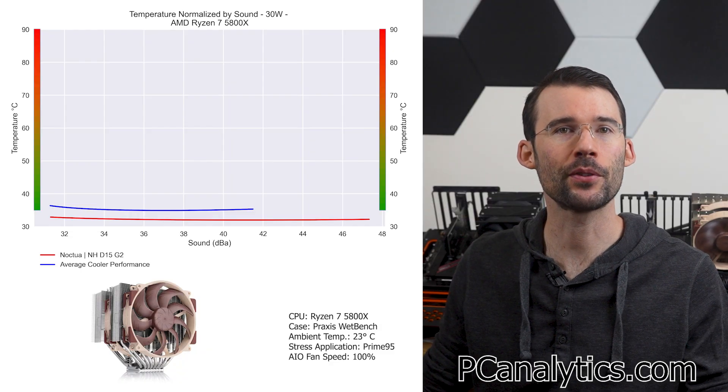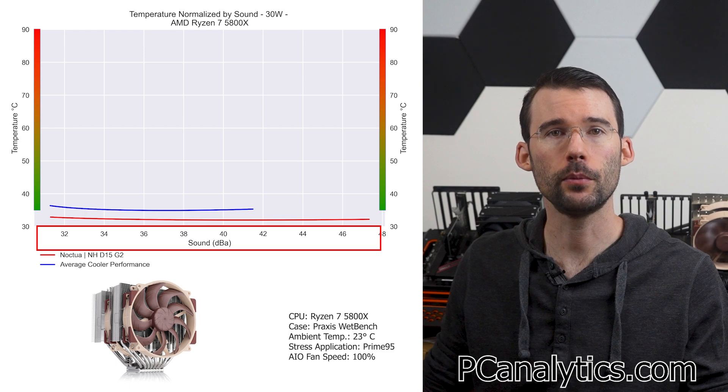In our second set of charts normalized by sound against the average cooler, we have temperatures on the left, noise on the bottom, with lower being better.